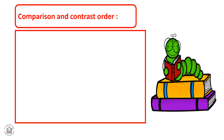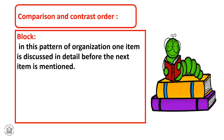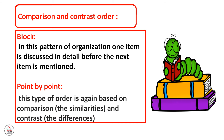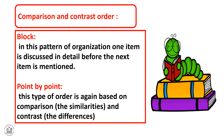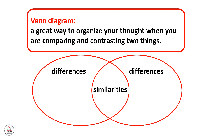Comparison and contrast order. We have the block order. In this pattern of organization, one item is discussed in detail before the next item is mentioned. Point by point order: this type of order is based on comparison — the similarities — and contrast — the differences. Use a Venn diagram when you compare and contrast. It's a great way to organize your thoughts when comparing and contrasting.